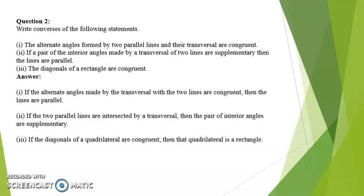Question number 2: Write converses of the following statements. First. The alternate angles formed by two parallel lines and their transversal are congruent. Answer: If the alternate angles made by the transversal with the two lines are congruent, then the lines are parallel.